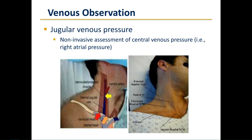Let's now discuss venous observation, which specifically refers to jugular venous pressure. The estimate of jugular venous pressure allows for a non-invasive assessment of central venous pressure — in other words, right atrial pressure. The assessment of jugular venous pressure is a critical component of the cardiovascular physical exam, and it is often inadequately performed and undervalued.